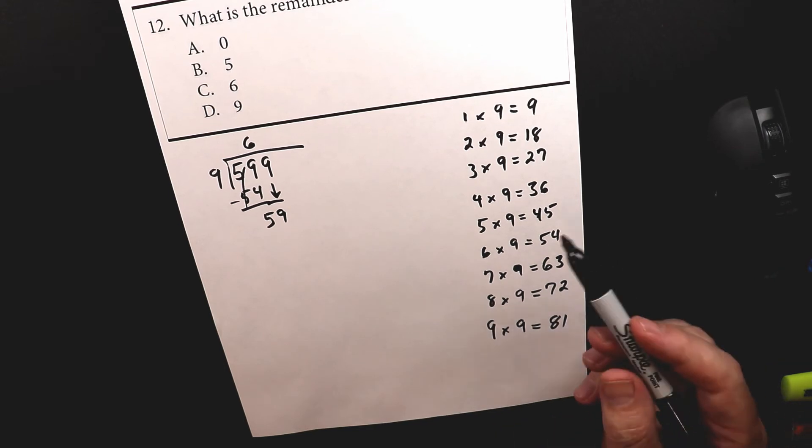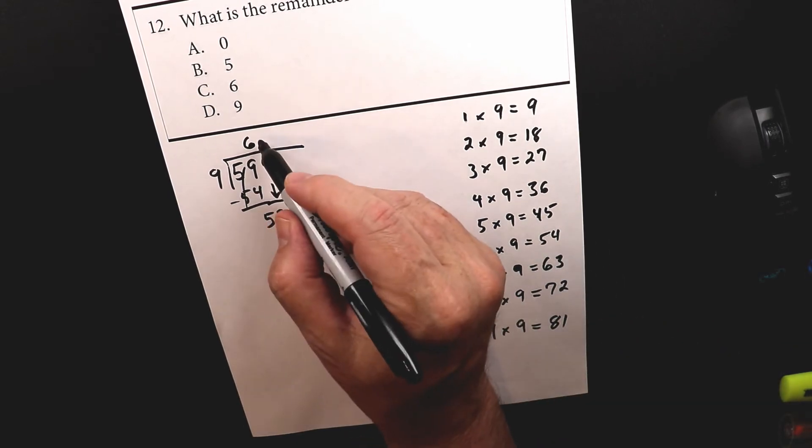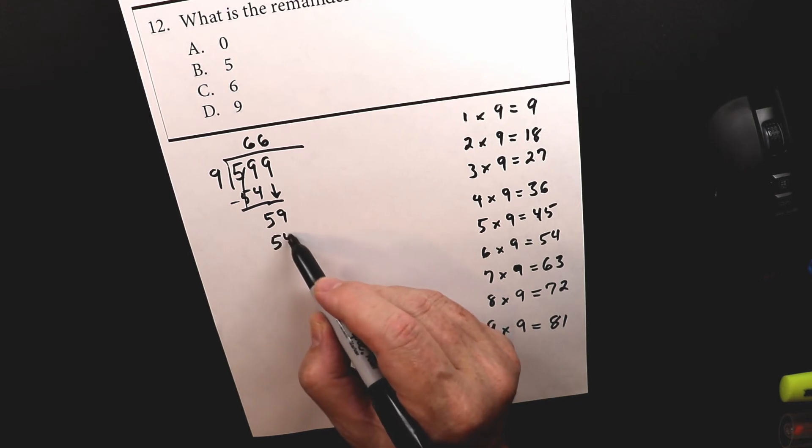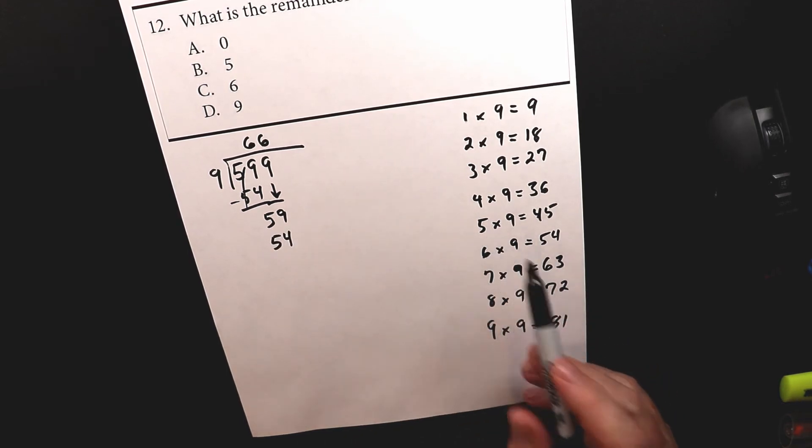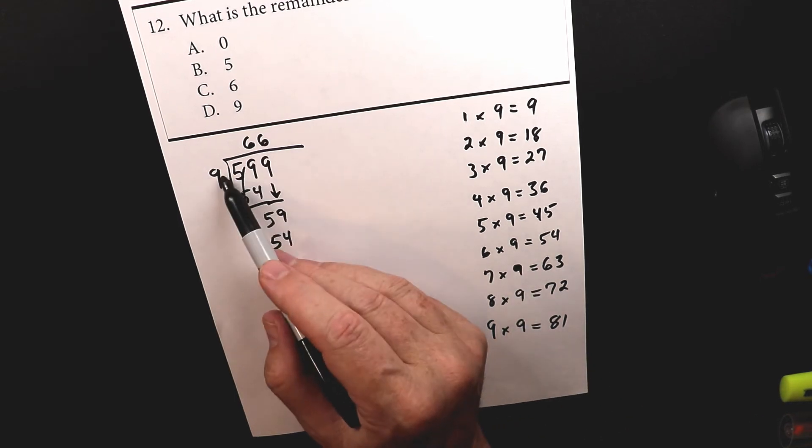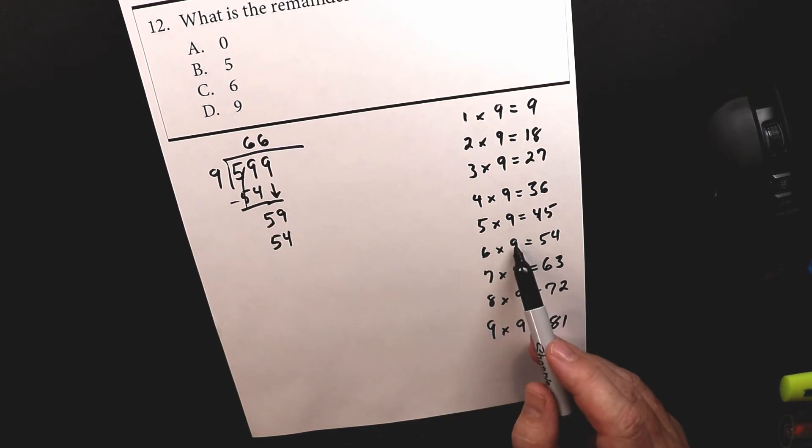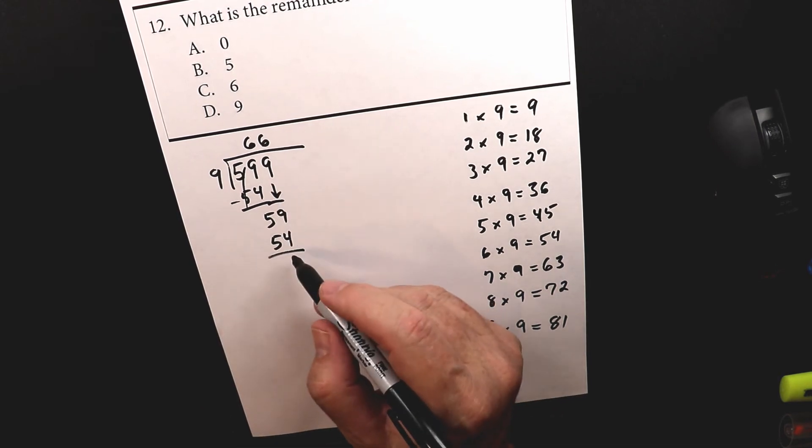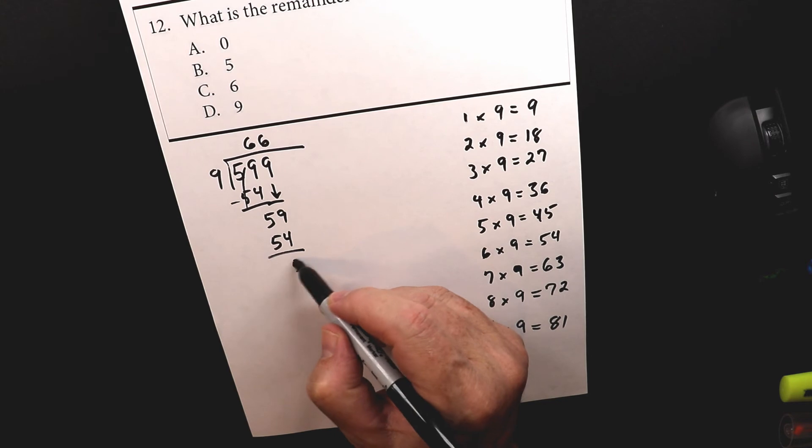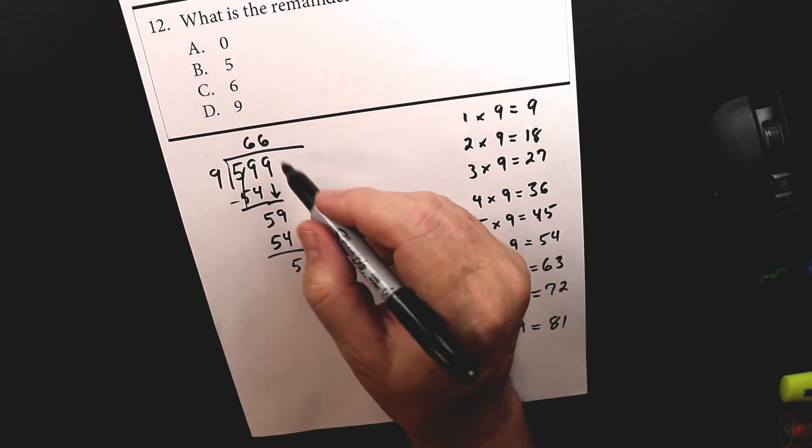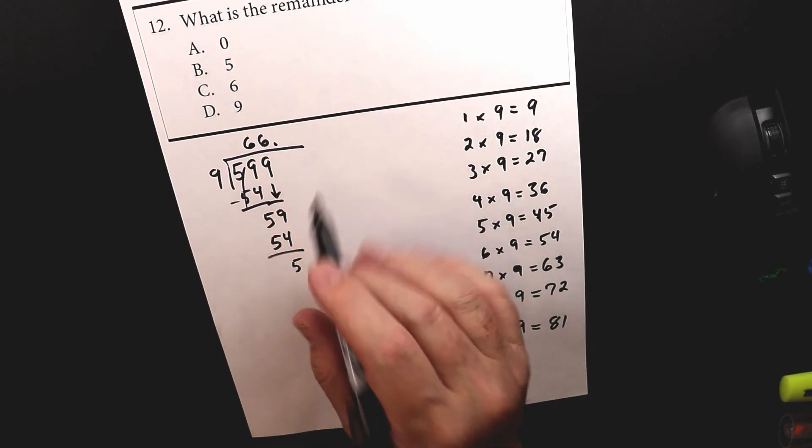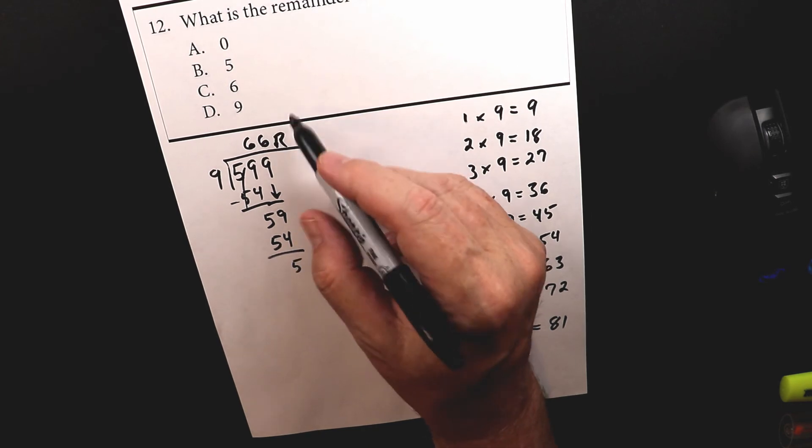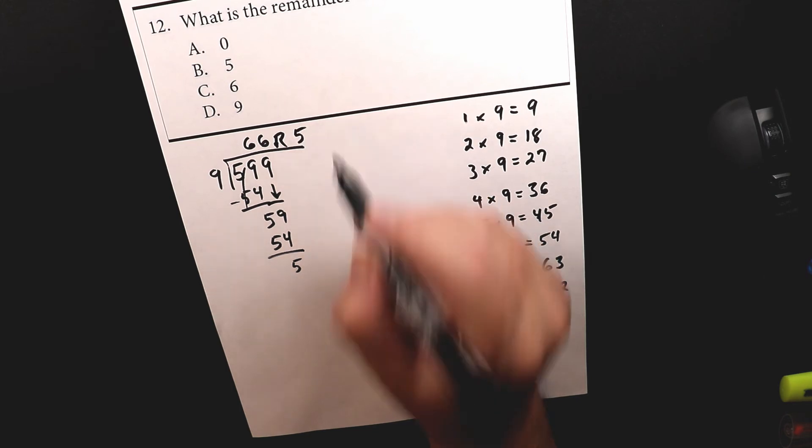So I look at this over here, 59. And up, same number again, six. So 54. Because nine times six, nine times six is 54. And then I subtract that again. So in this case, we're not going to put out the decimal, we're going to just put the remainder because that's what it's asking for. So it's remainder five.